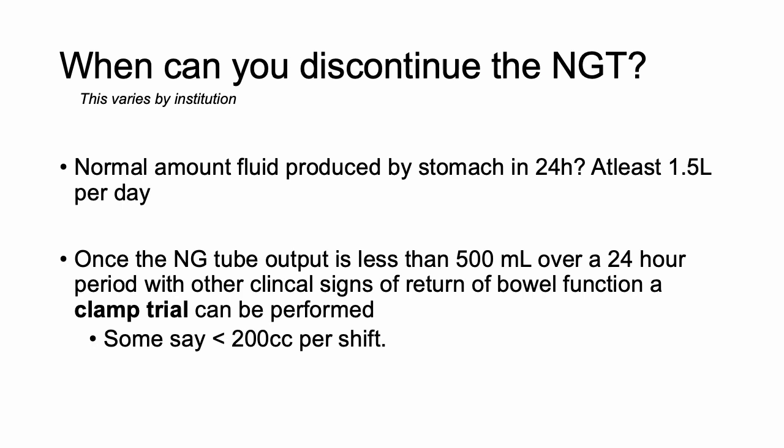When can you discontinue the NG tube? Note that this varies by institution. The normal amount of fluid produced by the stomach in 24 hours is at least 1.5 liters per day. You want to see that the majority of this fluid is being moved through the stomach and intestines. We like to see NG output less than 500 cc over a 24-hour period, though this can vary — some say 600 cc, or less than 200 cc per shift.